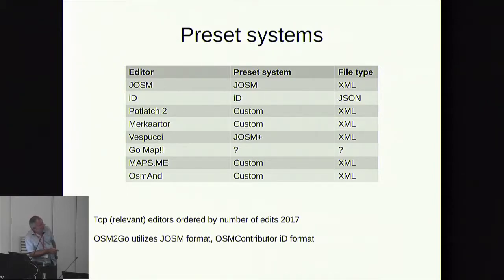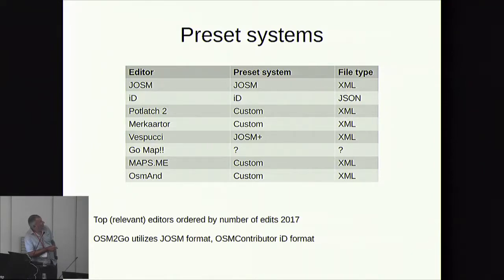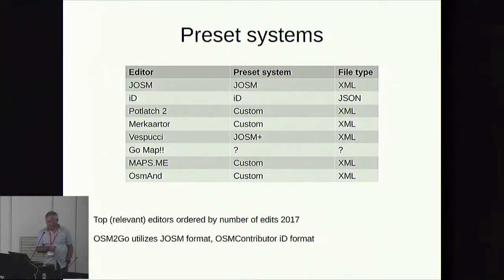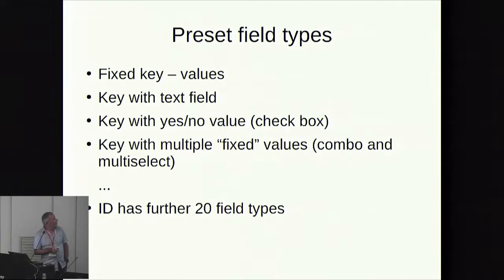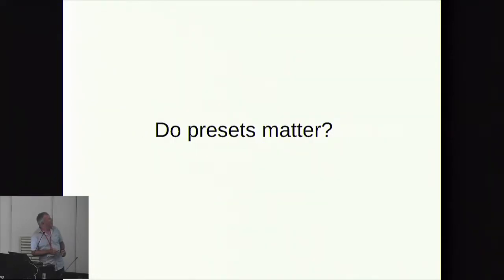Between JOSM and iD/Potlatch 2, you have an order of magnitude difference in current edits, then another order of magnitude to a smaller group of editors. OSM and its fairly extensive preset system represent yet another order of magnitude smaller. So we're talking hundreds of millions, tens of millions, millions, and around a hundred thousand. These systems are all very similar — technically not very different — which is why I say 'not invented here.'